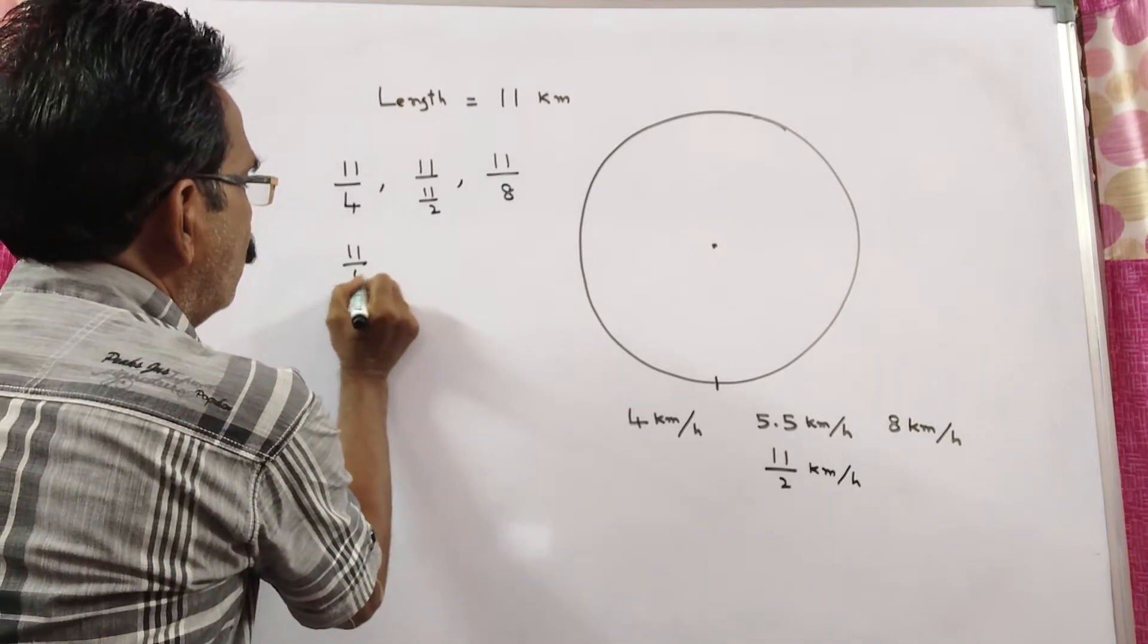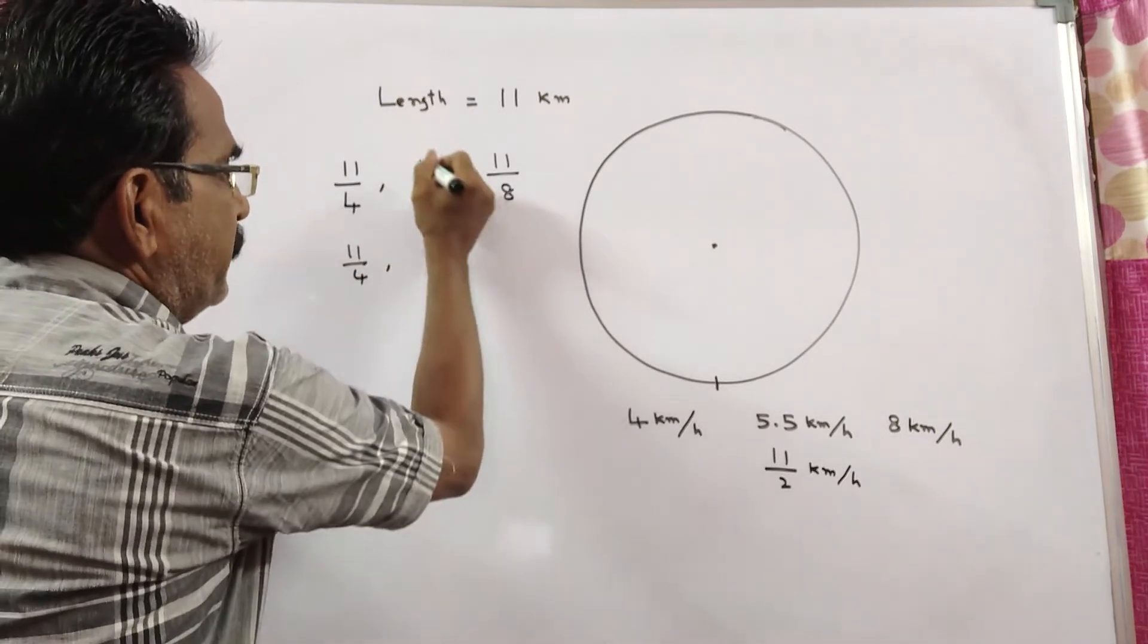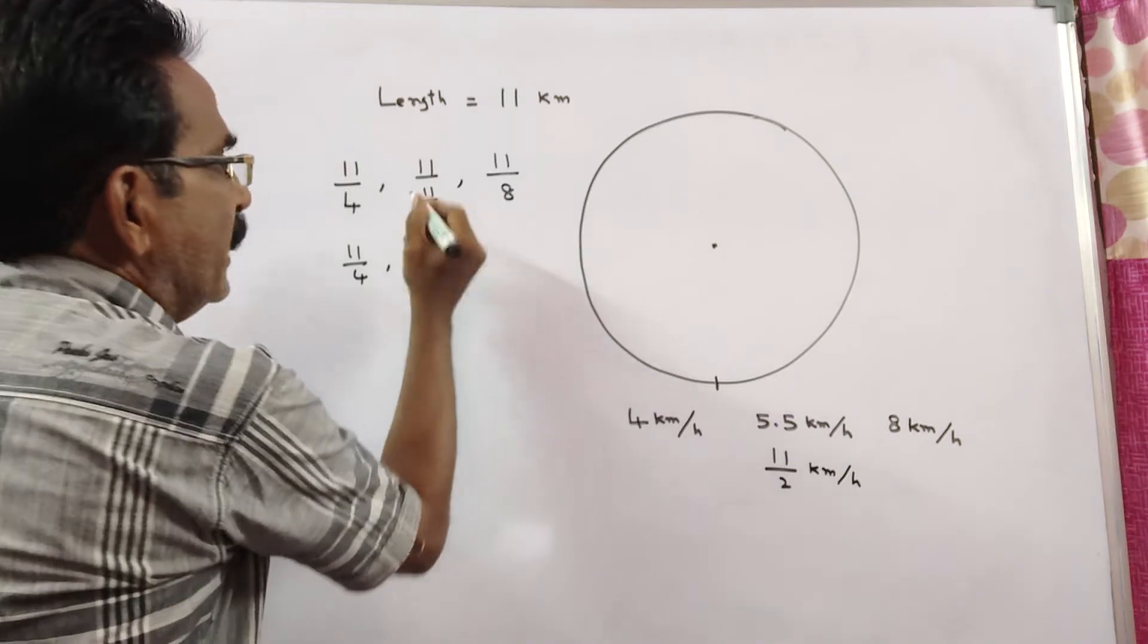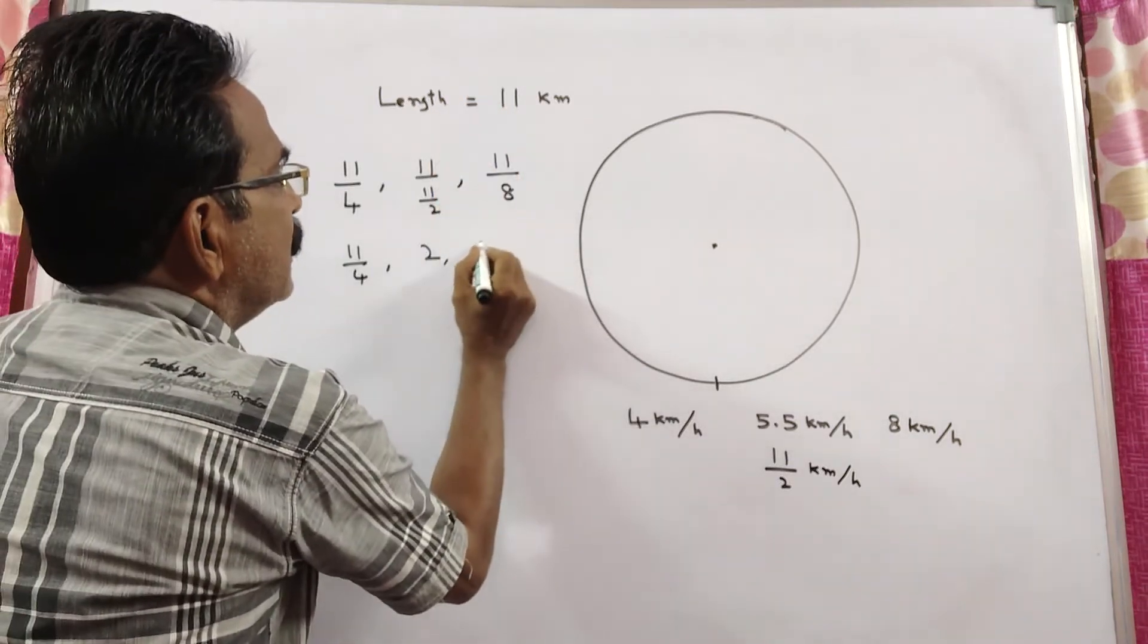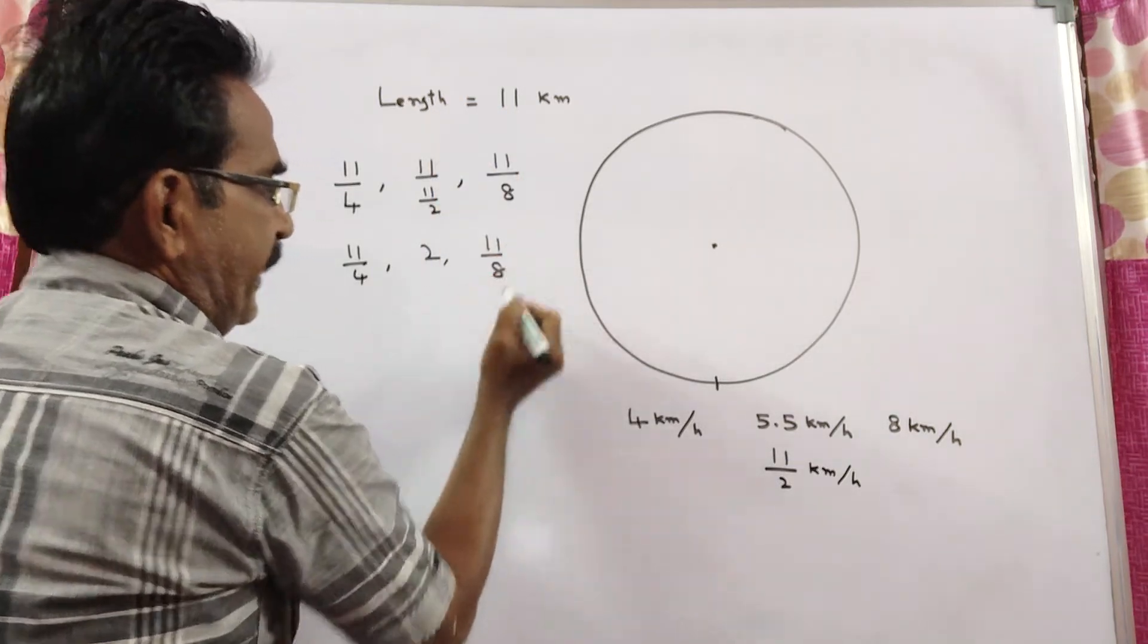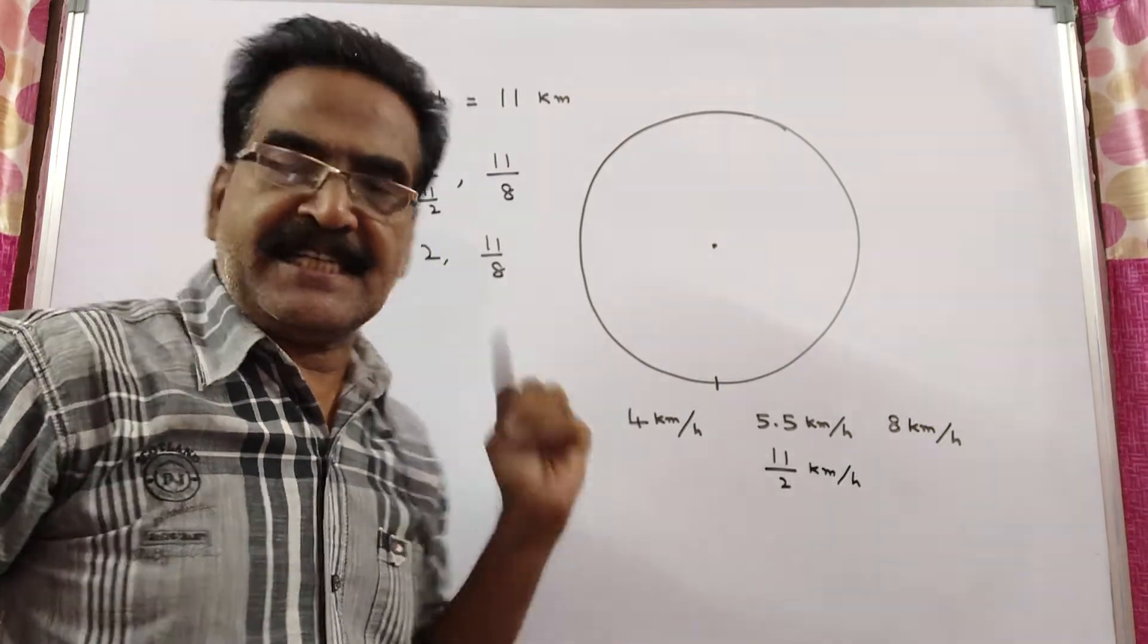So we have 11/4, 2 (which is 11 × 2/11), and 11/8. We need to find the LCM of these three fractions.